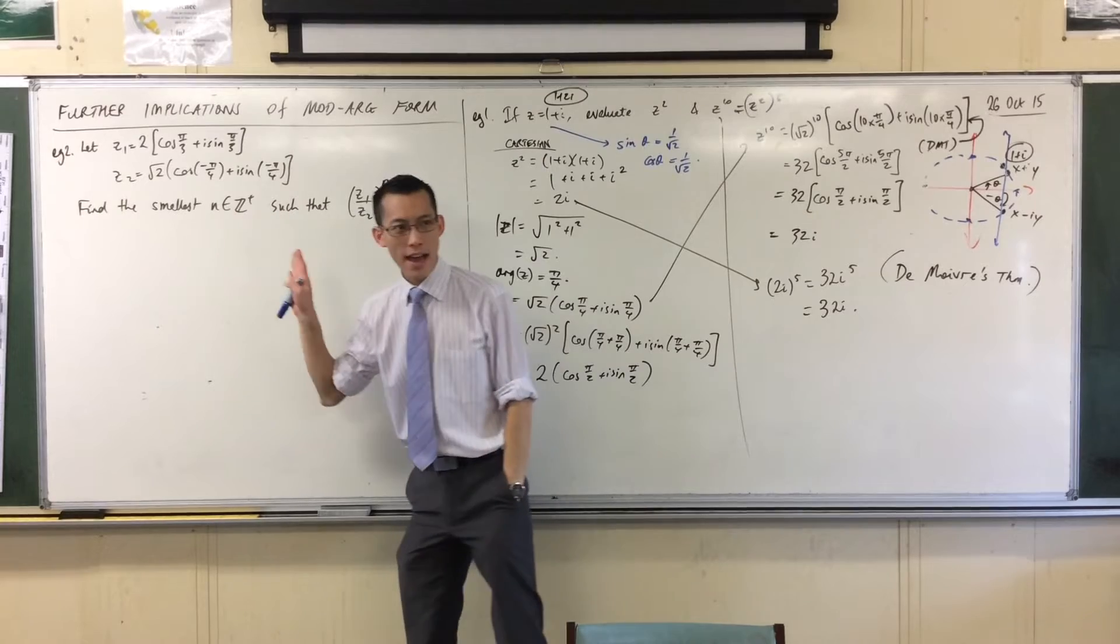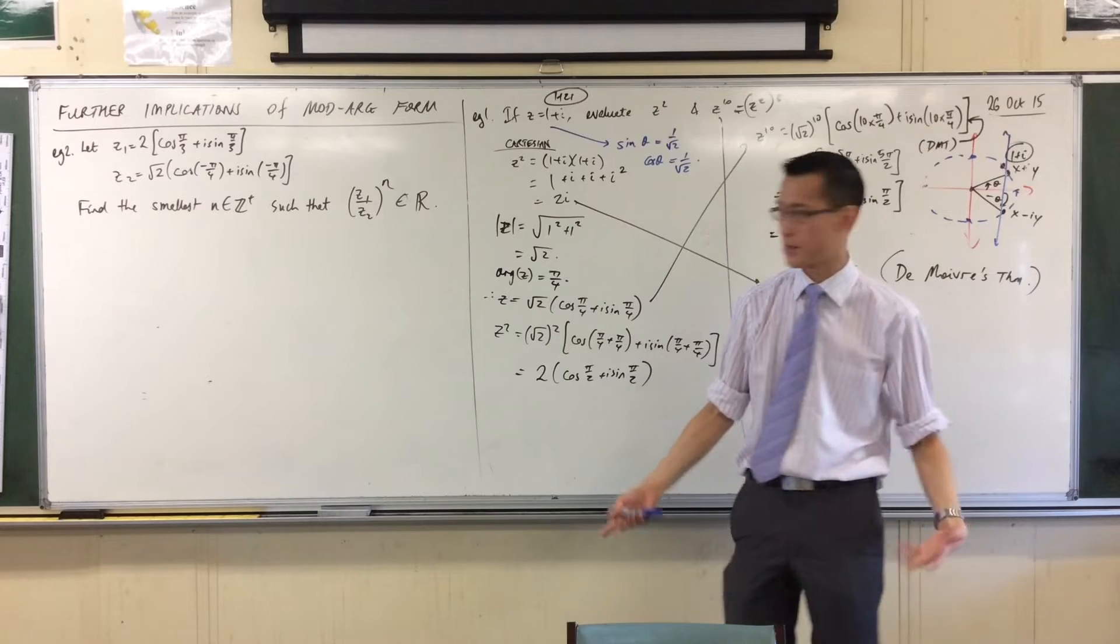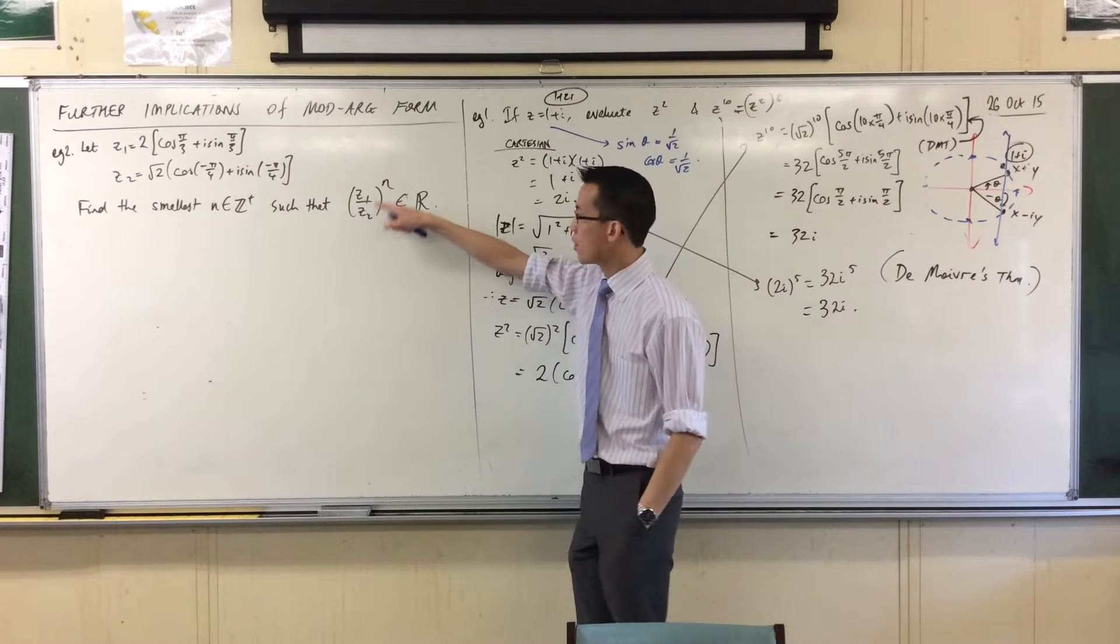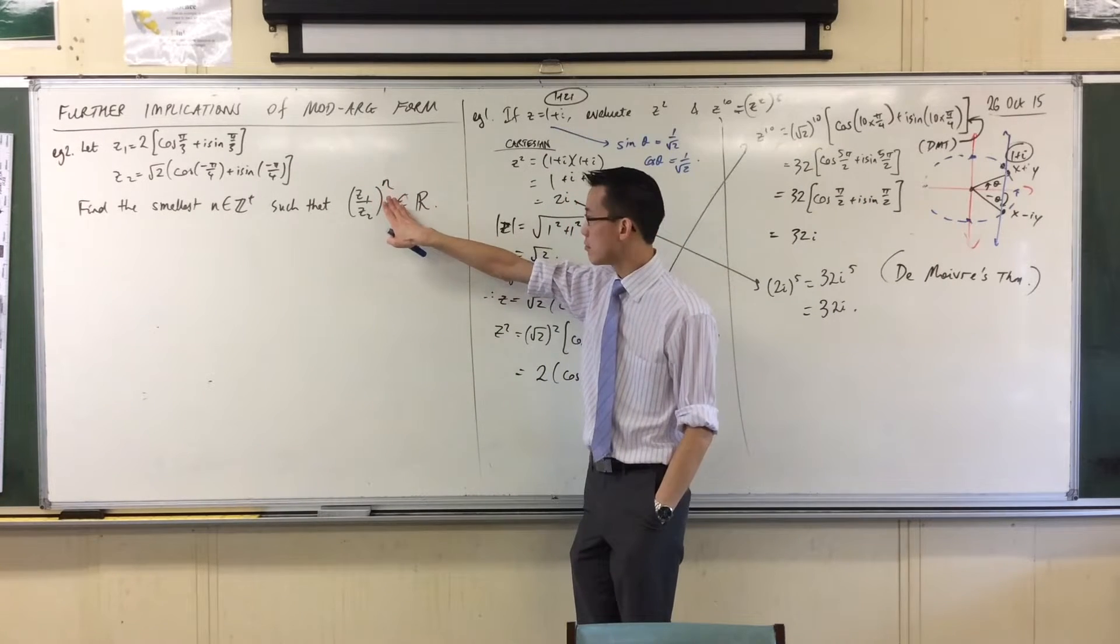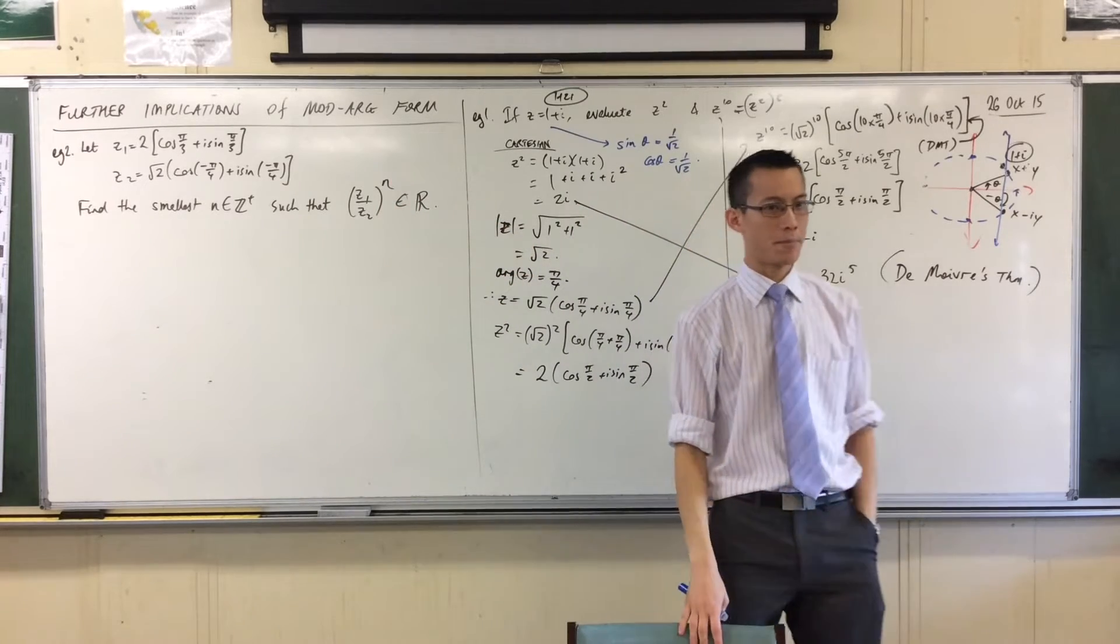We want to find a number n, positive integer, so what power do you want to raise this to, such that when you take the quotient of these two and you raise it to that power, you end up with a completely real number.